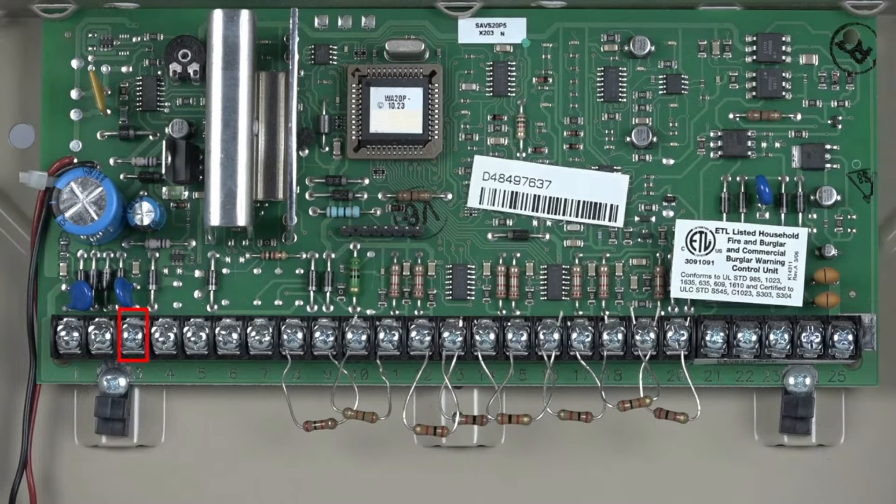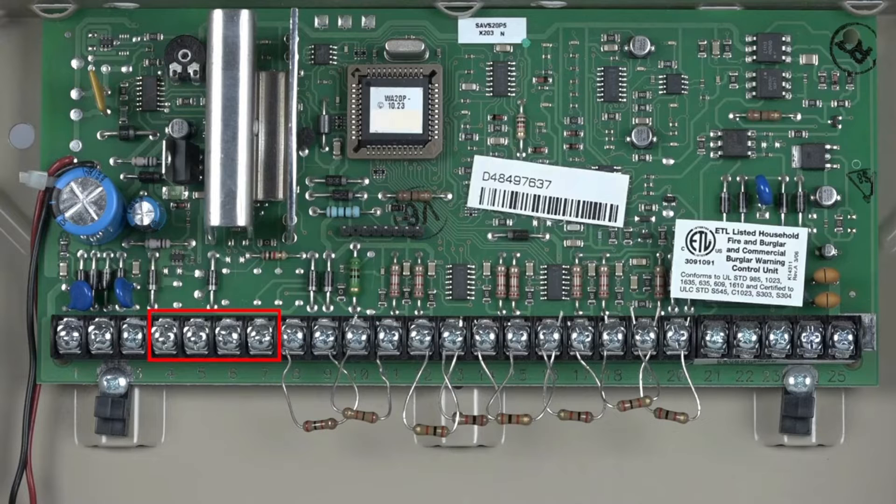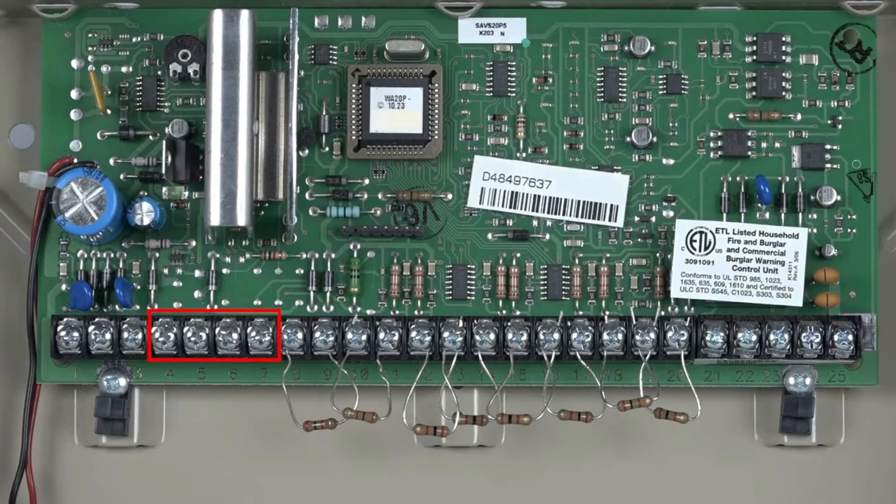Terminal 3 is the positive connection for your bell. Terminals 4 through 7 is your ECP bus. This is where all ECP devices such as keypads, a radio, and a wireless receiver are connected.